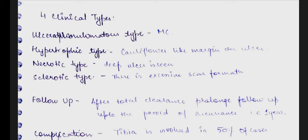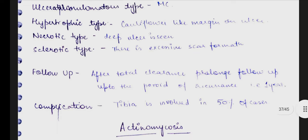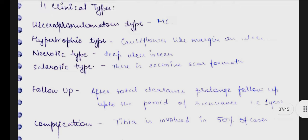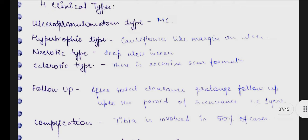The next one is the hypertrophic type. In hypertrophic type, the cells have seen overgrowth — extra cells are produced — giving it a cauliflower-like structure forming a raised margin on the ulcer. The next one is the necrotic type, where there is necrosis of the ulcer, and in the sclerotic type there is scar formation.